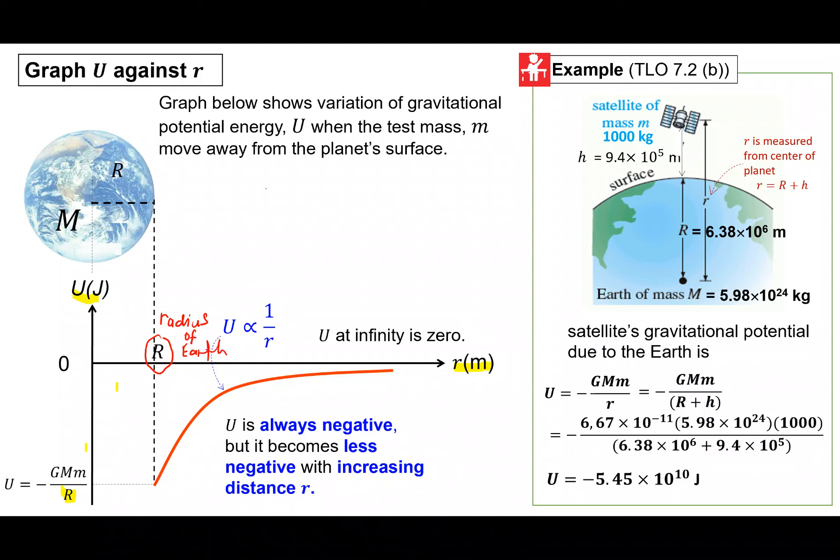As you go far from the surface, contohlah object tu duduk kat sini, lepas tu semakin jauh daripada bumi, so dia punya potential energy akan semakin lama, semakin kurang dan dia akan jadi almost zero. Tapi dia tak betul-betul zero. So U is always negative but it become less negative with increasing distance R. R kat sini, R kecil ni mestilah dikira daripada, mesti daripada center planet pergi tempat test mass tu. Itu adalah R.